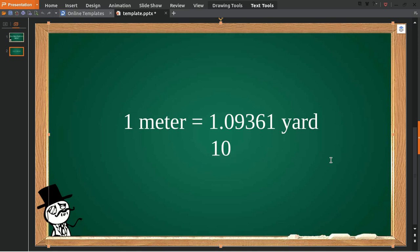In case you want to know how to convert meters into yards, this is how we do it. For example, I want to know how many yards is in 10 meters. So 10 meters is equal to how many yards?